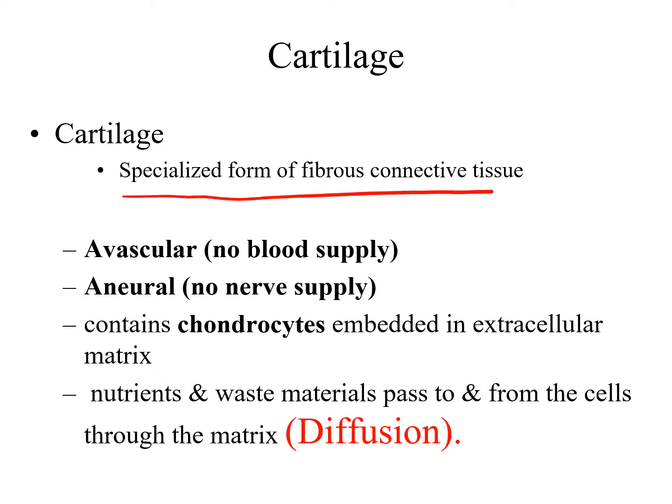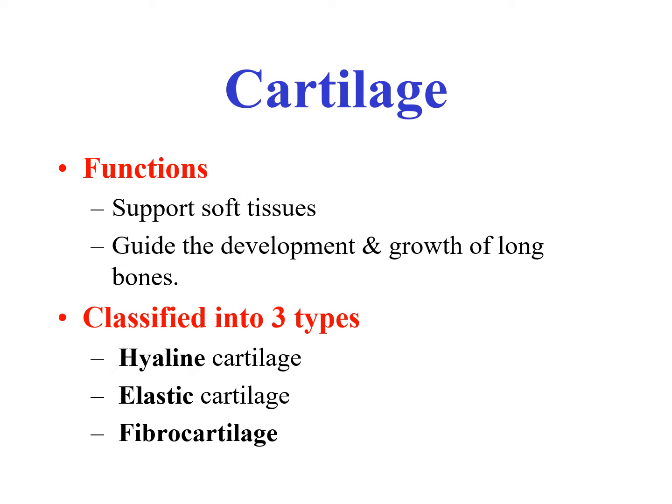Cartilage is a specialized form of fibrous connective tissue. It is avascular — there is no blood supply inside — and aneural — there are no nerves or nerve endings. By definition, cartilage consists of chondrocytes embedded in an extracellular matrix. Like any other organ, cartilage needs oxygen and nutrients, and these pass to and from the cells through the matrix by diffusion. The first function of cartilage is to support soft tissue; for example, the trachea is supported by C-shaped cartilage, keeping it patent and open at all times.